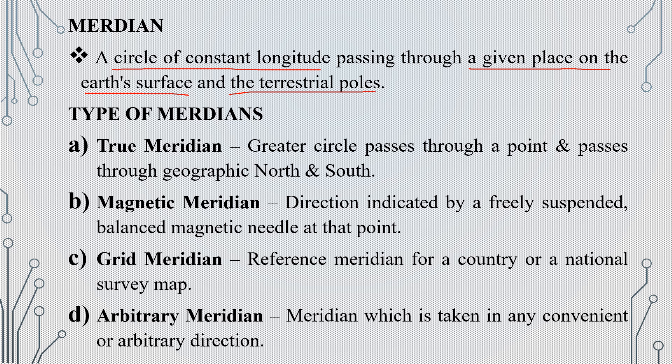The first type is True Meridian. A great circle passes through a point and passes through the geographical north and south. If you can see a great circle at a point, you can identify the geographic north and south. That is the true meridian.